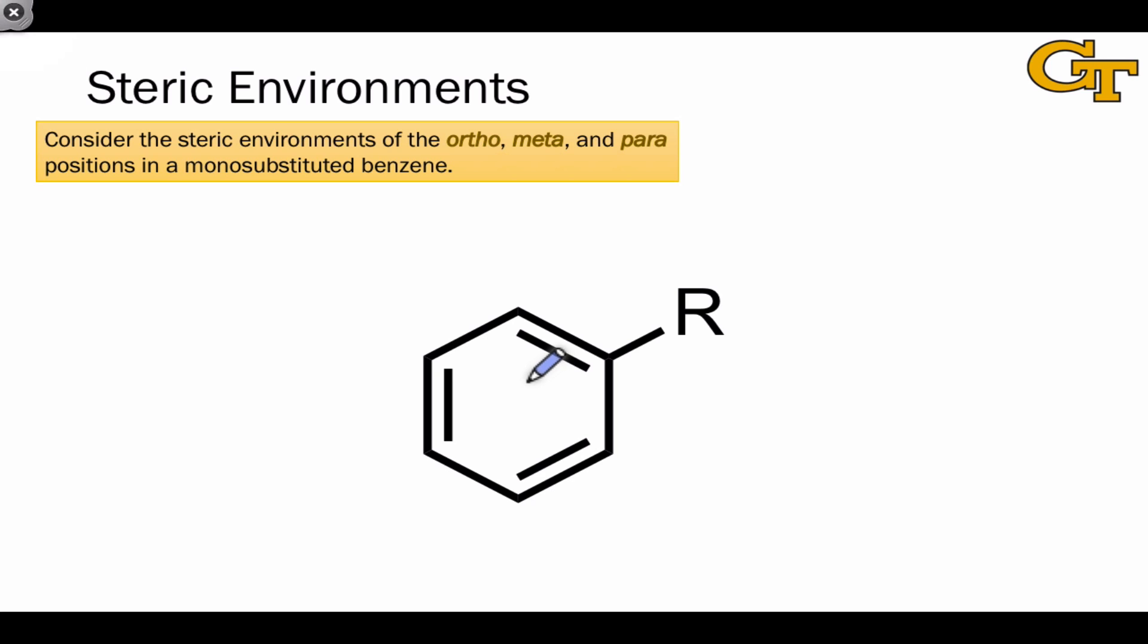One last thing that's important to consider before leaving ortho, meta, and para is the relative steric environments of the three different positions. Let's look at each in turn. First, I'm highlighting the ortho positions in blue. How do these look sterically? Well, they're the closest positions to the R group, which is going to have some amount of steric bulk. For that reason, we can conclude that the two ortho positions are the most hindered in a monosubstituted benzene like this. They experience the most hindrance due to their proximity to the substituent.